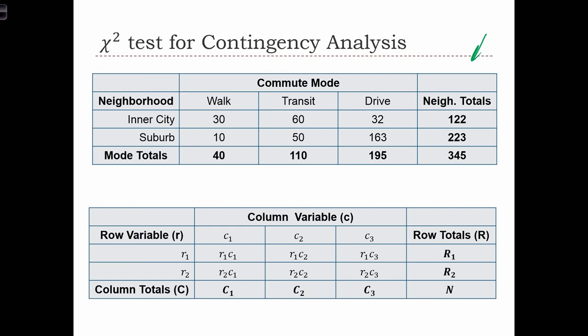In the general case, we can write a contingency table like this. What we are going to have are two variables, something that we call the column variable and something that we call the row variable - so commute mode and neighborhood type.